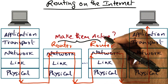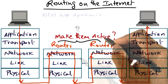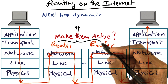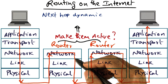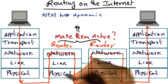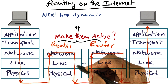Now, what does it mean to make the nodes active? What we mean by making the node active is that the next hop for sending this packet towards the destination is not simply a table lookup, but is actually determined by the router executing code — actively, as opposed to doing just a passive table lookup.